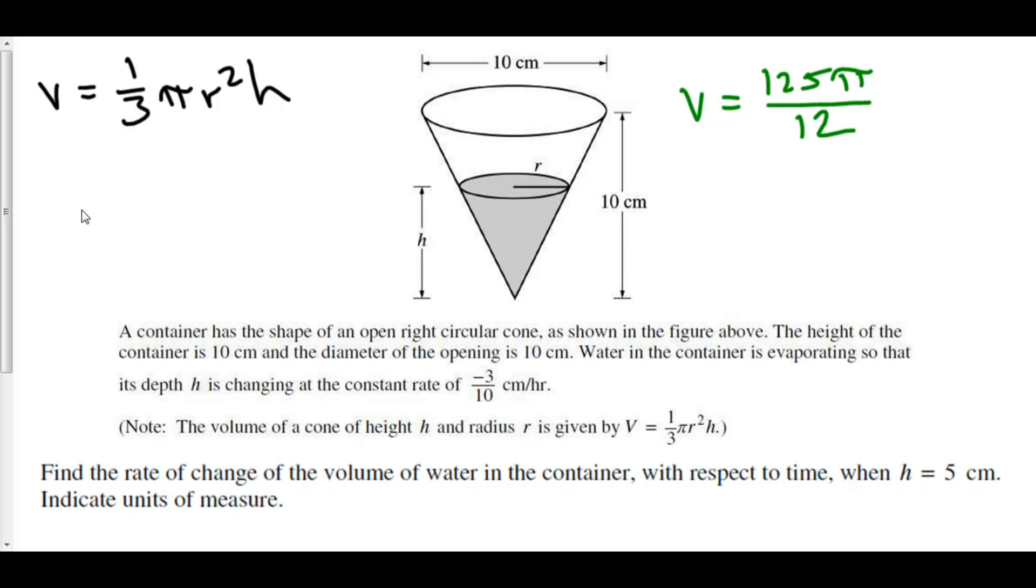But we have something else that will come out that we don't want. It's very unwanted. If you take the derivative of h, you'll get a dh dt out. And that's fine because they've given us that h is changing the constant rate of negative 3 over 10 centimeters per hour. They gave us dh dt. It's negative 3 over 10. However, they didn't give us a dr dt. We know nothing about dr dt. Absolutely nada.